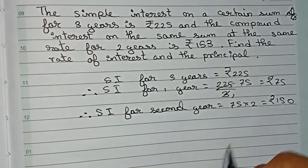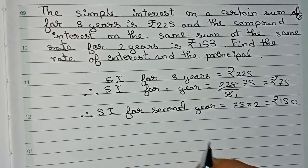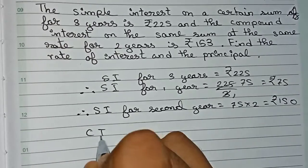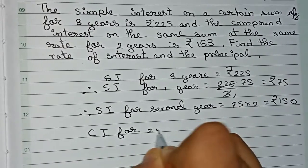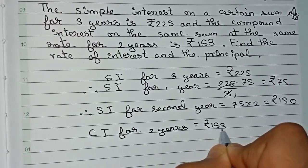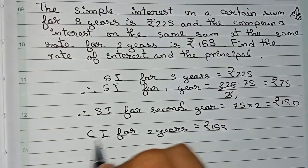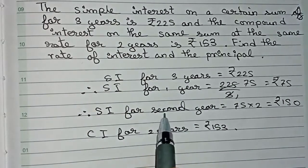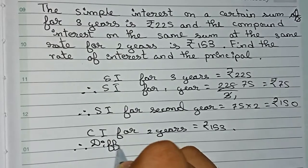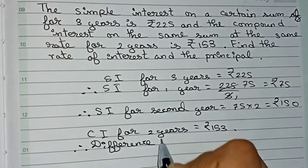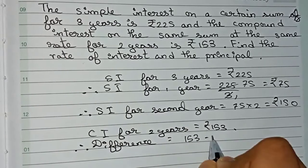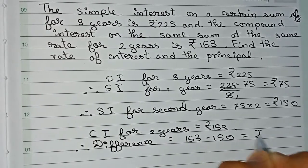We've got all the information for simple interest of first, second, and third year. They have given that CI for 2 years is ₹153, and the SI for the second year is ₹150. Therefore, the difference = 153 - 150 = ₹3.